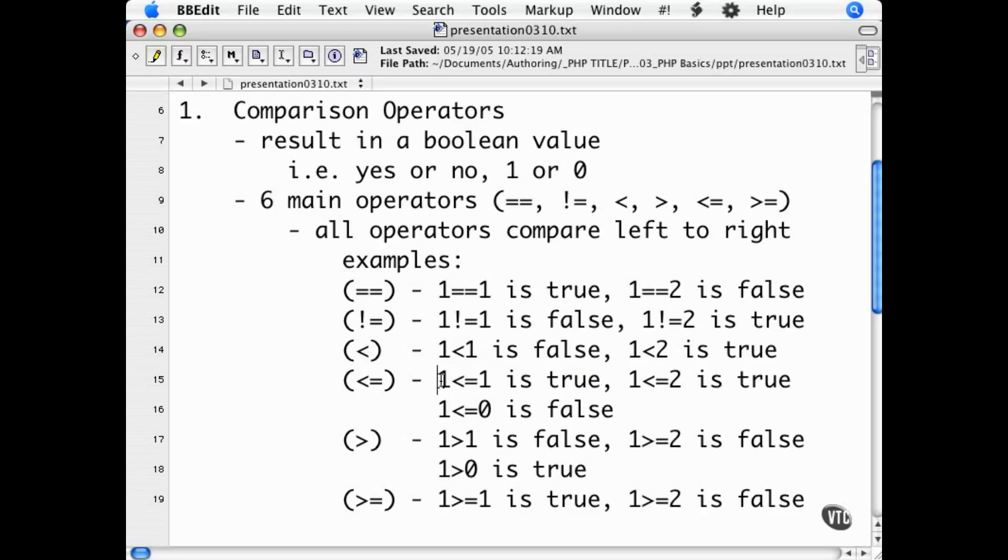The greater than operator returns true if the left side is greater than the right, and false if not. The greater than equals returns true if the left side is greater than or equal to the right side.